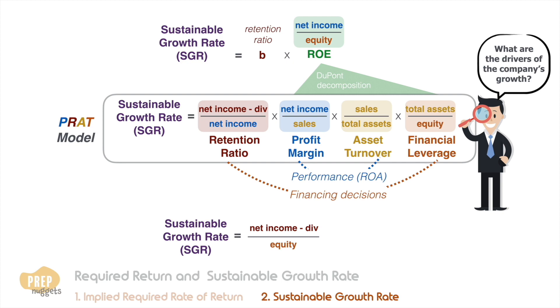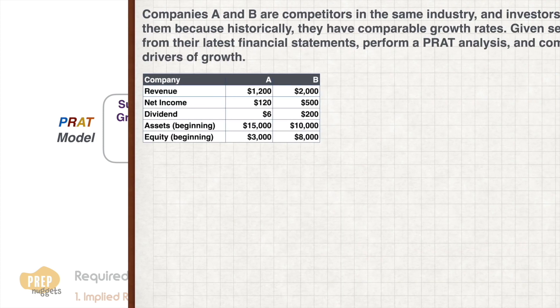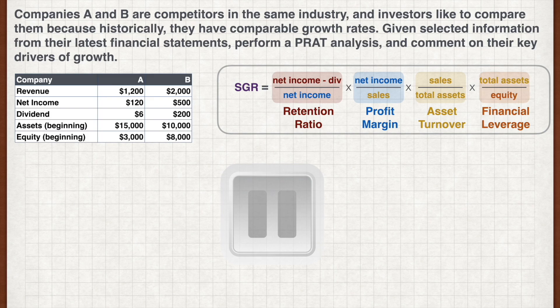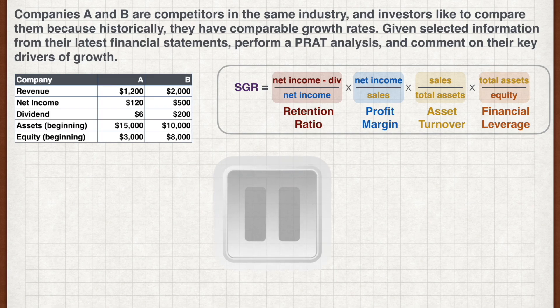The PRAT model is also often used by analysts to determine the drivers of growth for a company. Let's see how this works. Companies A and B are competitors in the same industry, and investors like to compare them because historically they have comparable growth rates. Given selected information from their latest financial statements, perform a PRAT analysis and comment on their key drivers of growth. Pause the video now and work out your answer.